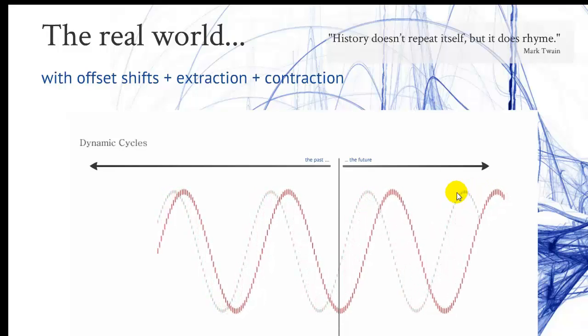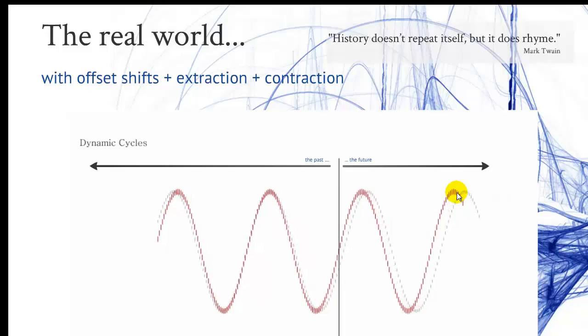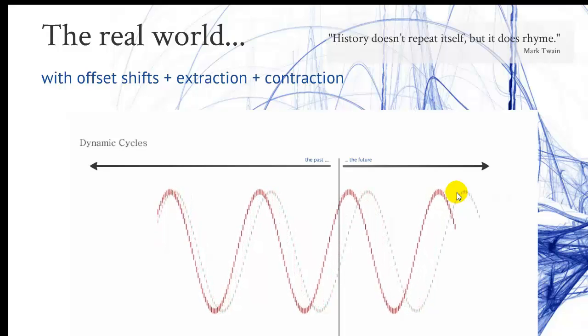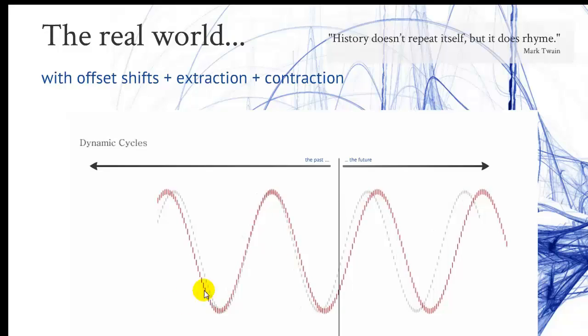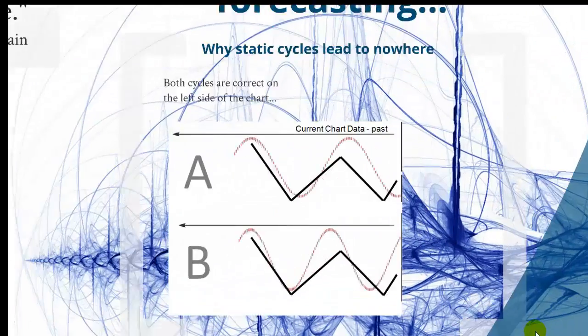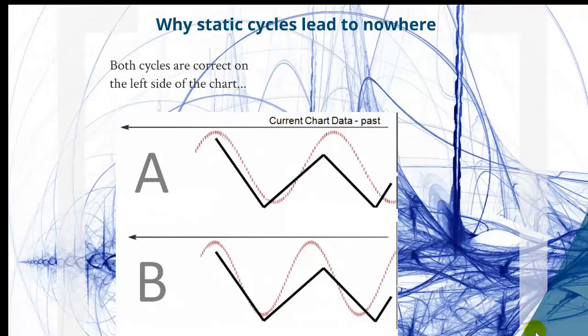This causes a real headache if you use static cycles on the future, on the right side of the chart. But the right side of the chart is quite the important one. Let me give you an example of why static cycles lead to nowhere here.